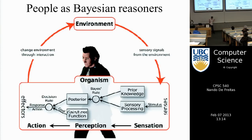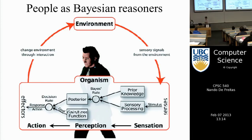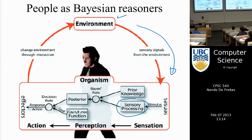To introduce the next acquisition function, I need some background on maximum expected utility. The view of people as Bayesian reasoners is: the environment provides data, your senses gather it, sensory processing extracts features, and you have prior knowledge that gets combined with data via Bayes' rule to give you the posterior distribution.